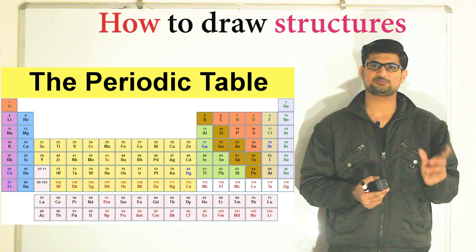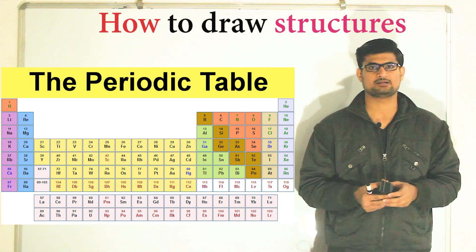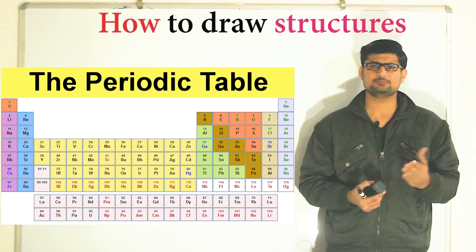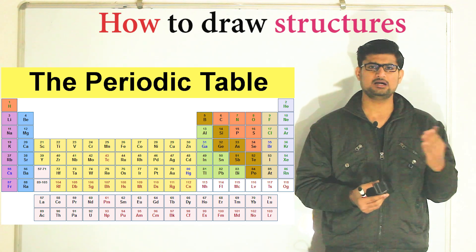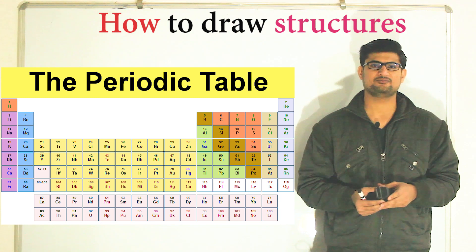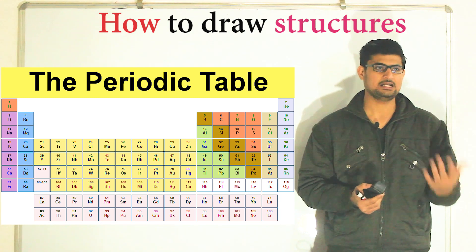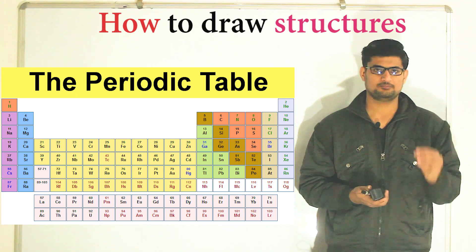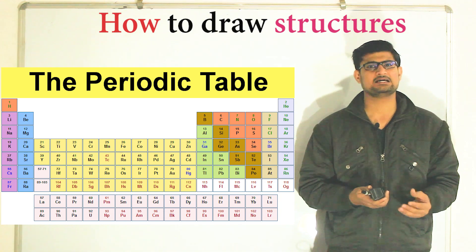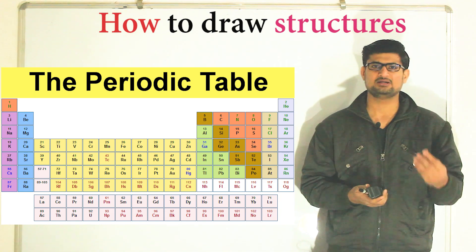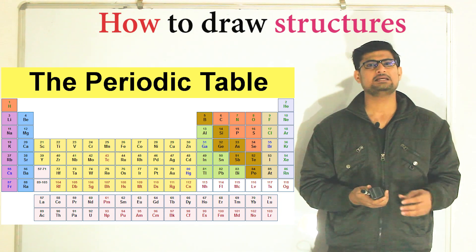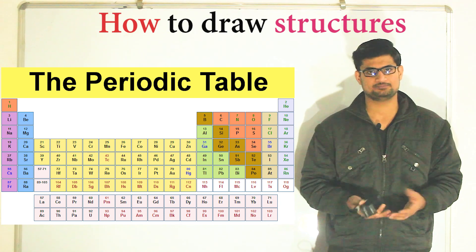The first point is how to select the central atom. If any atom belonging to the third period or higher period is present, that atom will be the central atom of the molecule. But if no such atom is present, the atom having the lowest electronegativity value will be considered as the central atom.